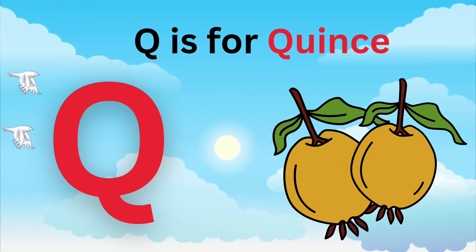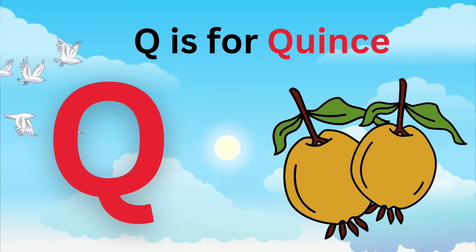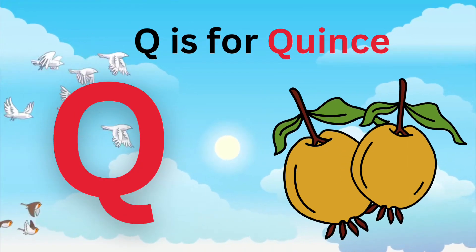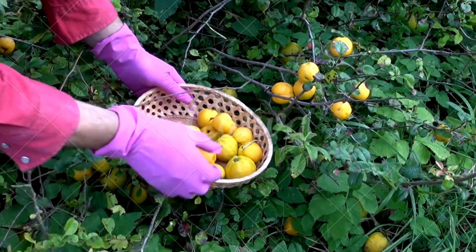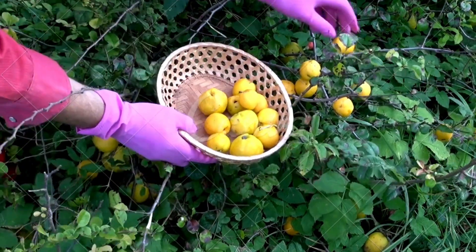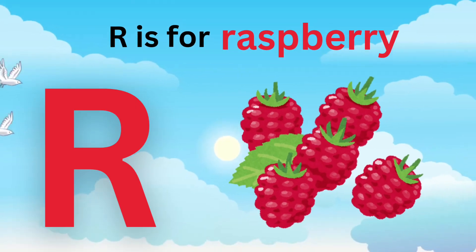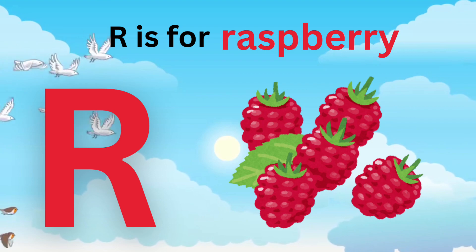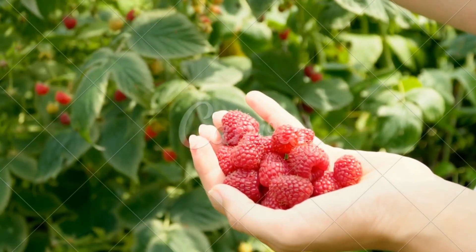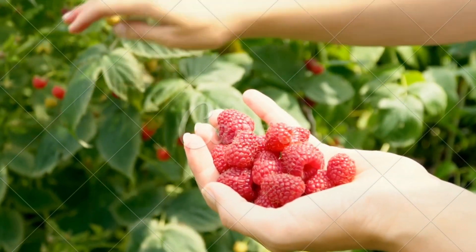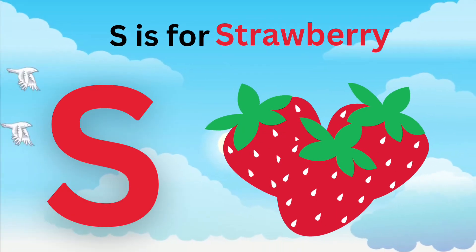Q is for Quince. Q, Q, Quince. Q is for Quince. Q, Q, Q. R is for Raspberry. R, R, Raspberry. R is for Raspberry. R, R, R.